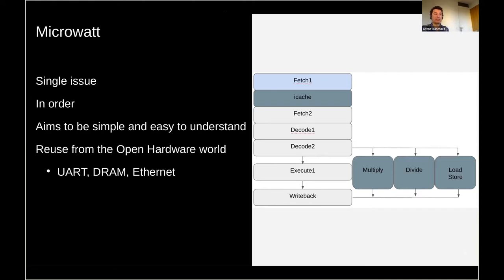On the right is the pipeline. It's a fairly standard pipeline where we have a number of stages through fetch, decode, and then execute and write back. So, it's a pretty simple, relatively easy to understand core.